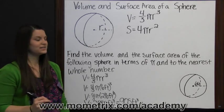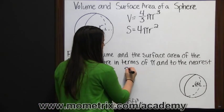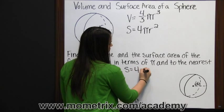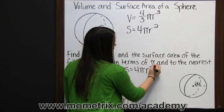Now to find our surface area. The surface area is found by multiplying four times pi times radius squared.